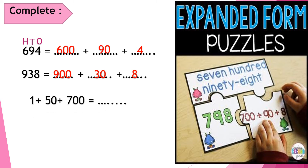Number 3: 1 plus 50 plus 700. We have the expanded form and want to write the standard form. Put 1s, 10s, 100s. This 1 has no zeros, so it belongs to 1s — put 1 in 1s. This 50 has one zero, so it belongs to 10s — put 5 in 10s, without the zero. This 700 has two zeros, so it belongs to 100s — put 7 in 100s, without the zeros.